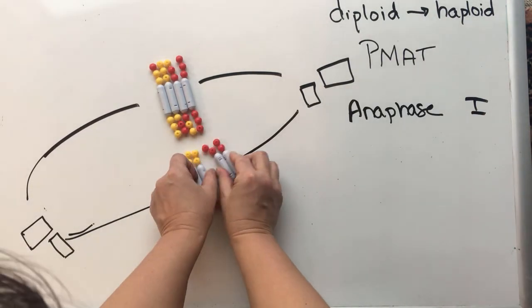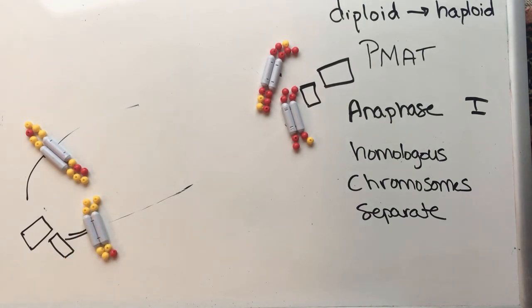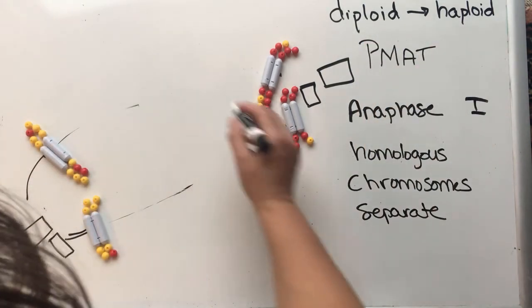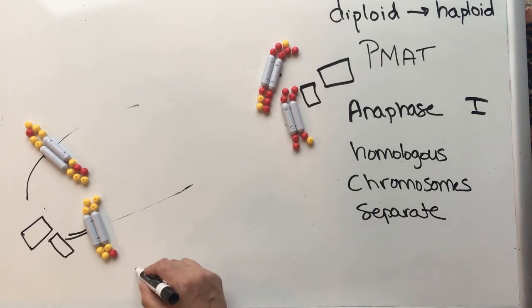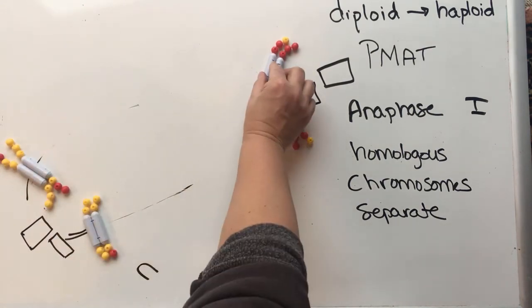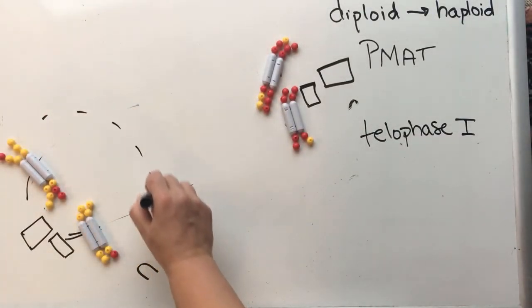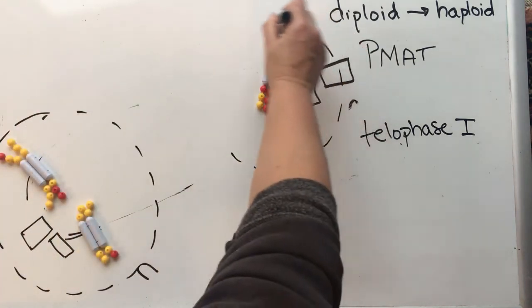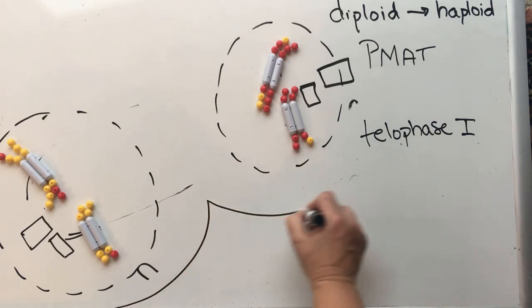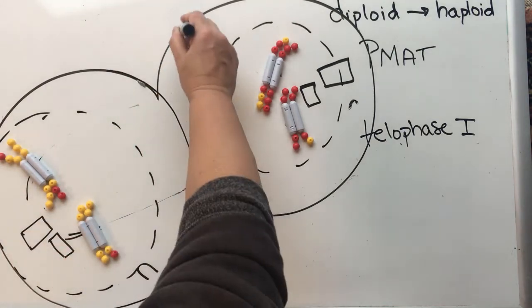During anaphase 1, the homologous chromosomes split and separate. What we've done right there is gone from a diploid cell to a haploid cell — these cells are now N. They were 2N because we had two copies of every chromosome, but now that we've split the homologous chromosomes, we only have one copy of chromosome 1 and one copy of chromosome 2. In telophase 1, we start to reform our nuclear envelope and our DNA starts to decondense. Then we go through cytokinesis, where the cell pinches together in the middle and we form two new cells.